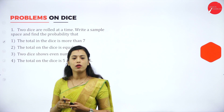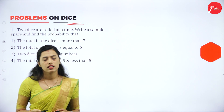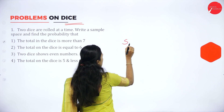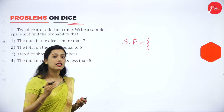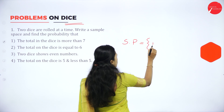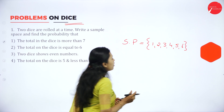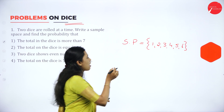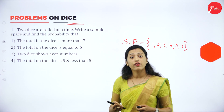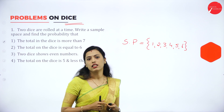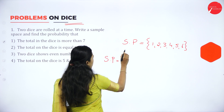Now we will solve some problems on probability. First, we have problems on dice. If we throw a dice, what is the sample space? Sample space means possible outcomes. The sample space is {1, 2, 3, 4, 5, 6}. If we throw two dice simultaneously, what is the sample space? We will write the sample space for throwing two dice.